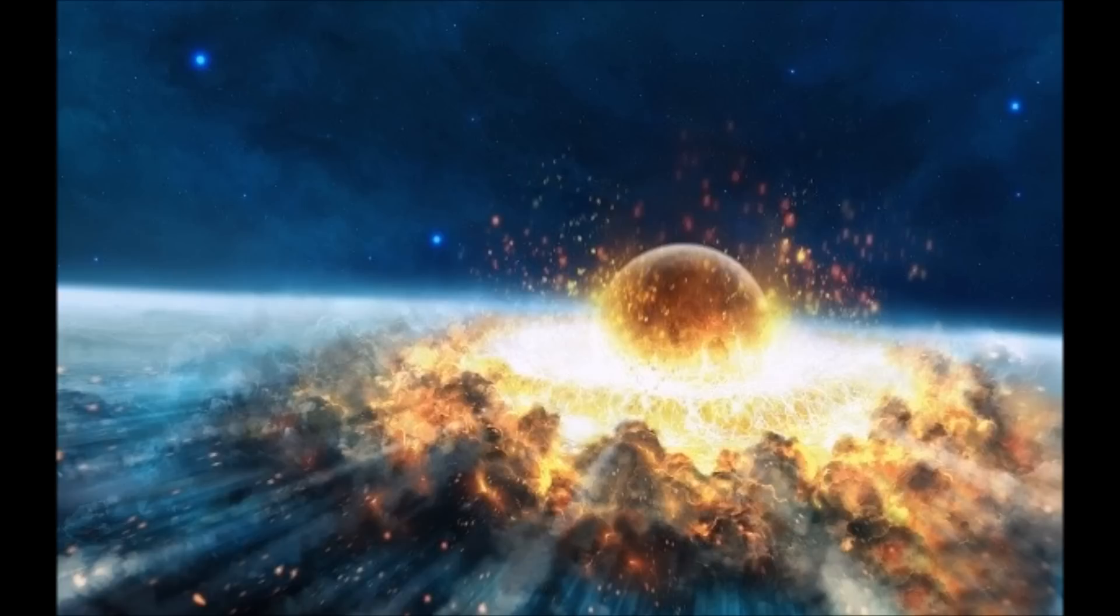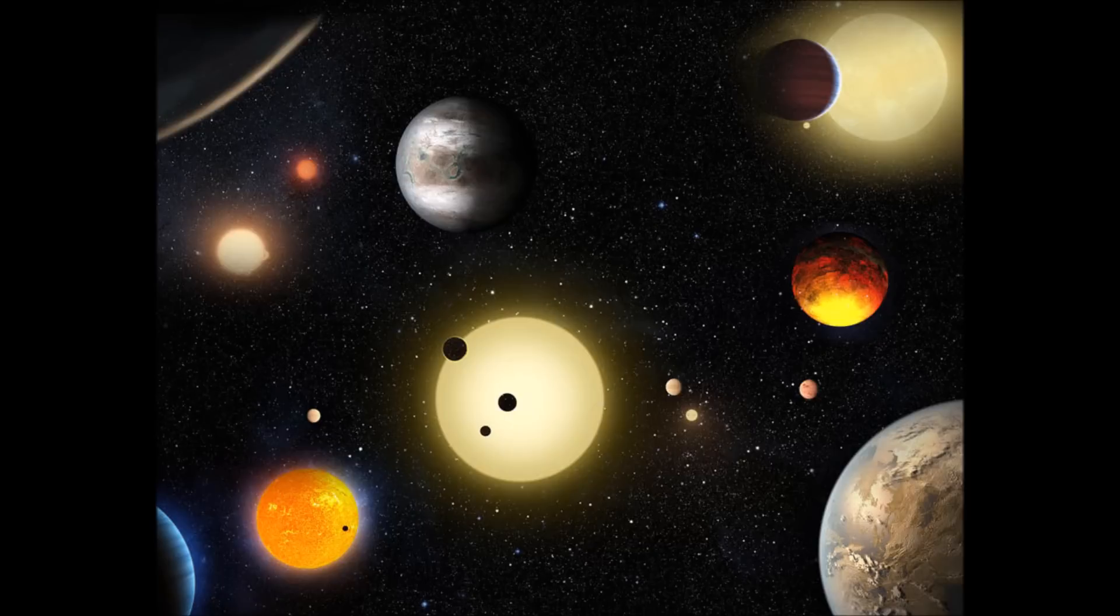The giant protoplanet likely hit the ice giant billions of years ago. Now the planet is oddly tilted in relation to the other planets in the solar system. He said our findings confirm that the most likely outcome was that young Uranus was involved in a cataclysmic collision with an object twice the mass of Earth, if not larger.